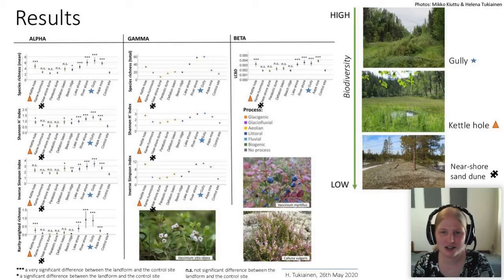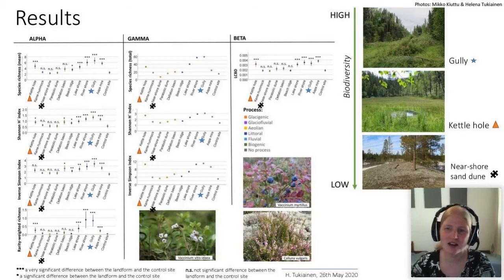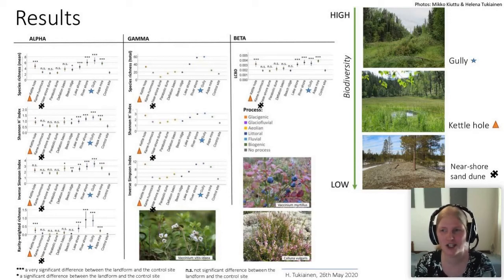Biodiversity was most pronounced in gullies, marked with blue stars in the plots, and in river shores. Additionally, kettle holes, marked with orange triangles, lake shores, and aapa mires seem to support somewhat high biodiversity. To conclude, landforms that are moist, hydrologically variable, and which sustain a number of microclimates and microhabitats are high in biodiversity. Some landforms such as near-shore and parabolic sand dunes were low in biodiversity, even lower than the control sites, probably because they are dry, lichen-covered forests with low soil moisture content in the sandy soil.